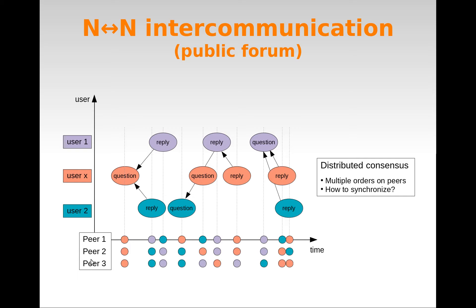How to determine what each peer has received and not received? And how can we make sure that all delivery orders do not break any consistent rule — for example, that an answer always arrives after its corresponding question?